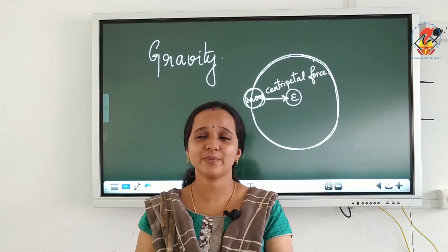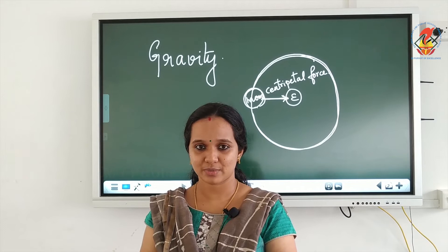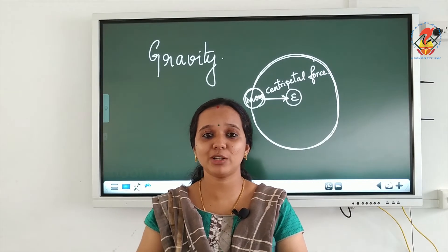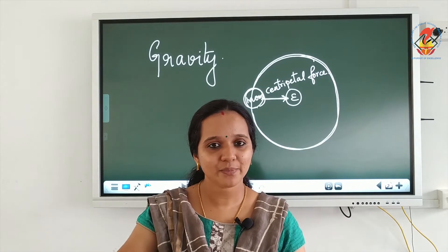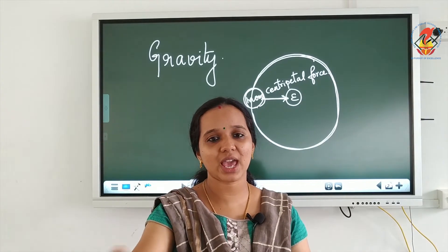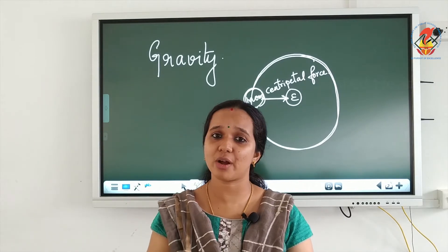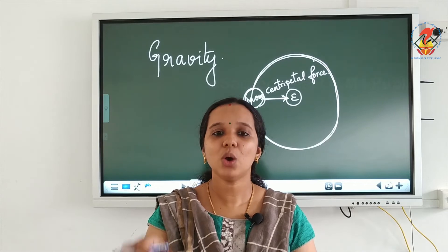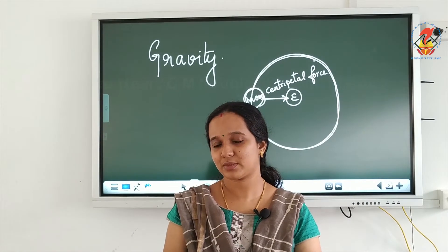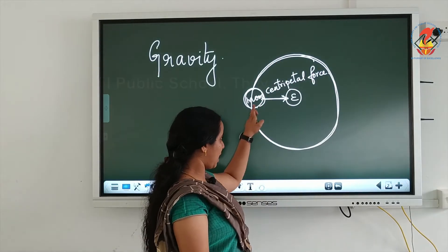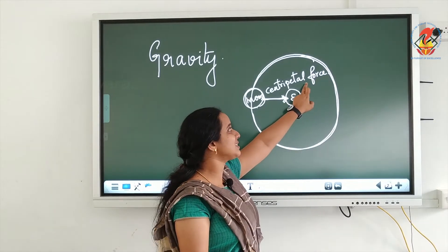Newton originally thought that like an apple or a ball, every object would fall down to the earth. But through the study of centripetal force, he was able to explain why this has not happened. When a body moves in a circular path, it experiences a force acting towards the center — that is called centripetal force.